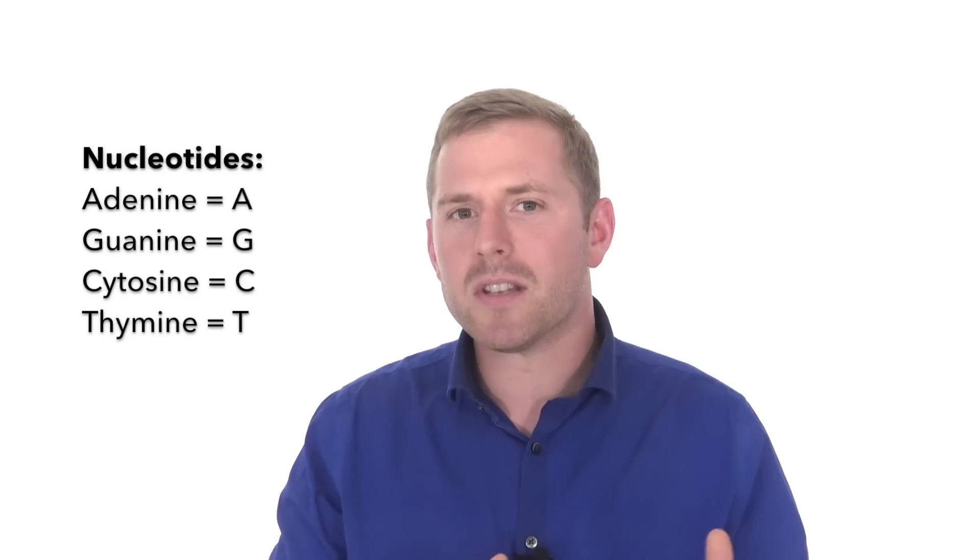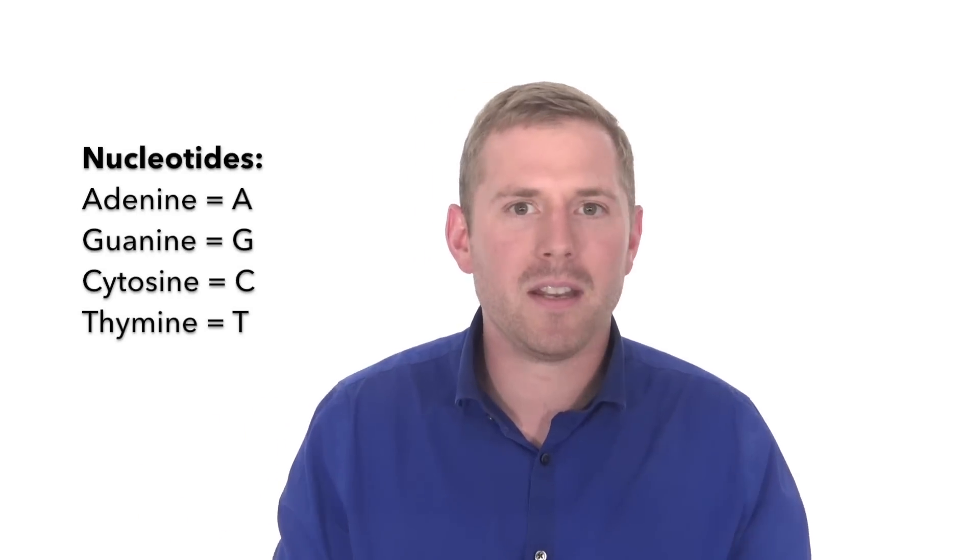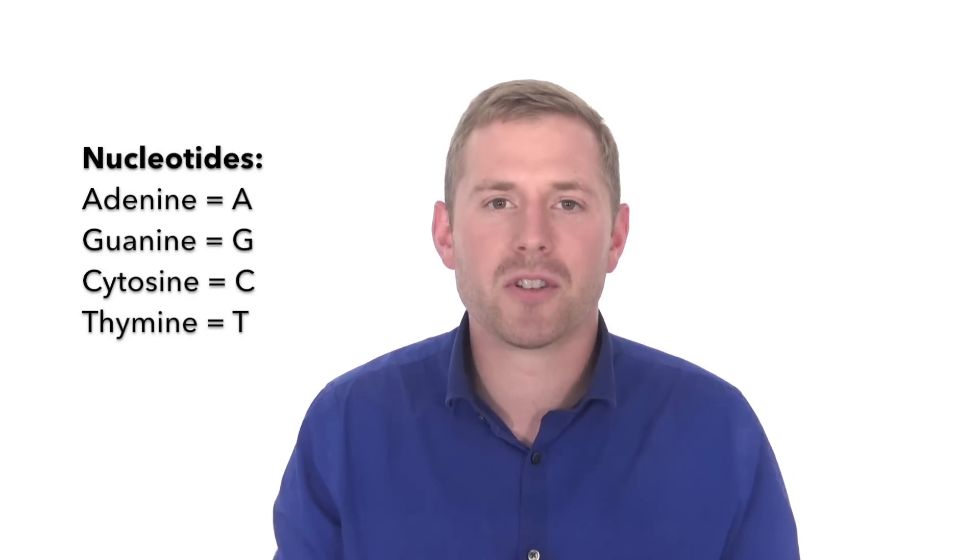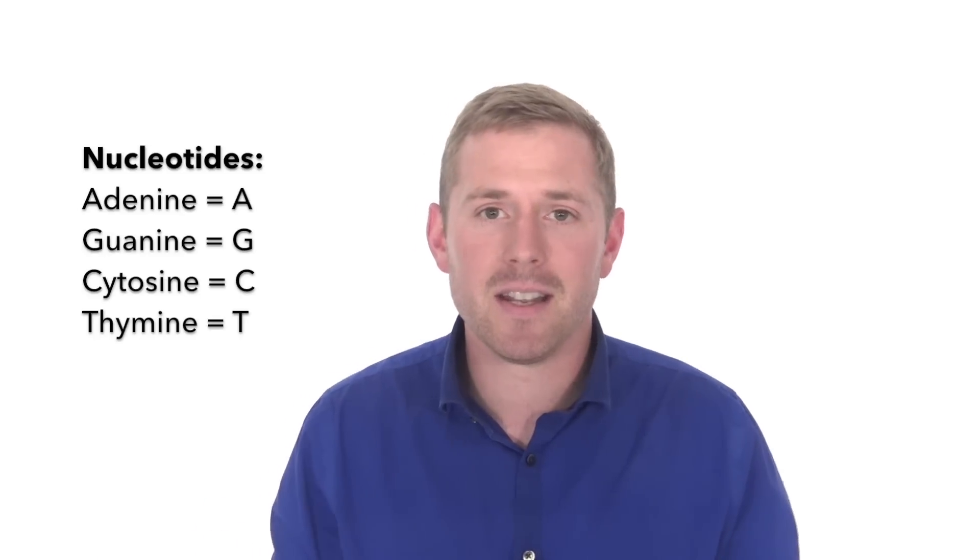Those rungs of the genetic ladder are made up of a pair of nucleotides. Nucleotides are adenine, guanine, cytosine, and thymine, each referenced in the code from their first letter, A, G, C, and T, respectively.